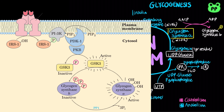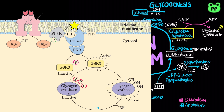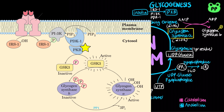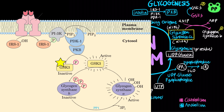Glycogenesis is promoted by the insulin cascade. First, insulin binds to receptor tyrosine kinase, which phosphorylates the insulin receptor substrate 1, or IRS1, which in turn activates phosphatidylinositol 3-kinase, or PI3K, that converts phosphatidylinositol bisphosphate in the membrane to phosphatidylinositol triphosphate, which activates a protein kinase known as PDK1 that in turn activates protein kinase B, or PKB. PKB phosphorylates glycogen synthase kinase 3, preventing glycogen synthase kinase 3 from inactivating glycogen synthase.